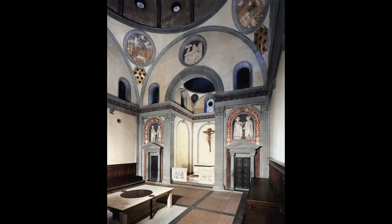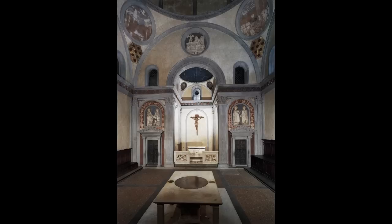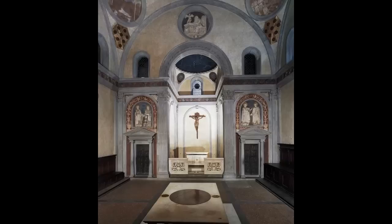Brunelleschi has done some extraordinary things here. First of all, there's a sense of solemnity, of calmness, that is in part a result of the extraordinary sense of geometry and order, rationalism — so many of the characteristics that we associate with 15th century Florentine Renaissance thinking, humanism. So instead of the mysterious soaring spaces of a Gothic church, we have a space built on the fundamental geometric shapes of the square and the circle, and a sense of clarity.